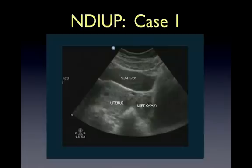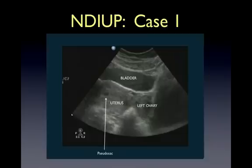Here's one example of an NDIUP. We are looking at a small sac in the uterus that is not surrounded by a double decidual sign. This is called a pseudosac. A pseudosac may indicate a very early pregnancy, but may also be present in ectopic pregnancies.